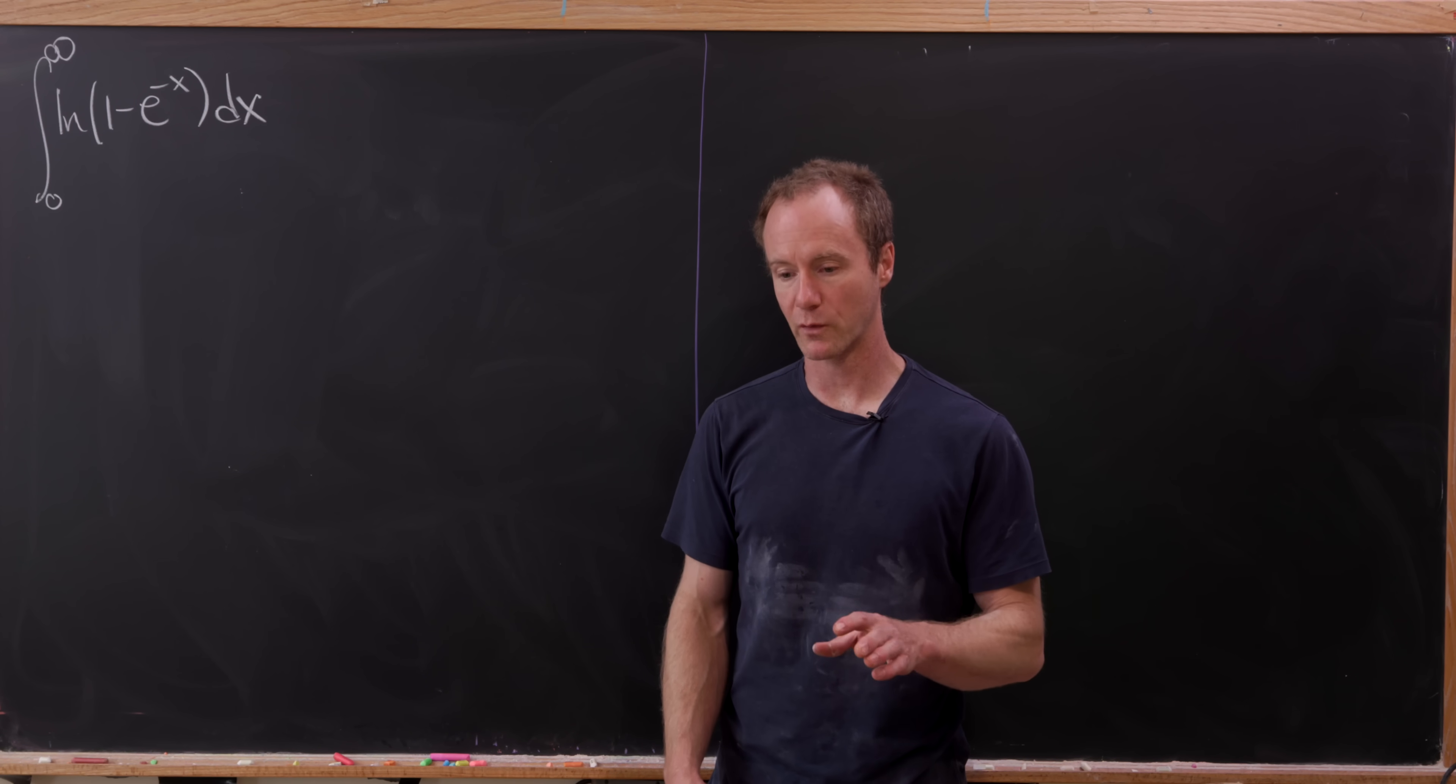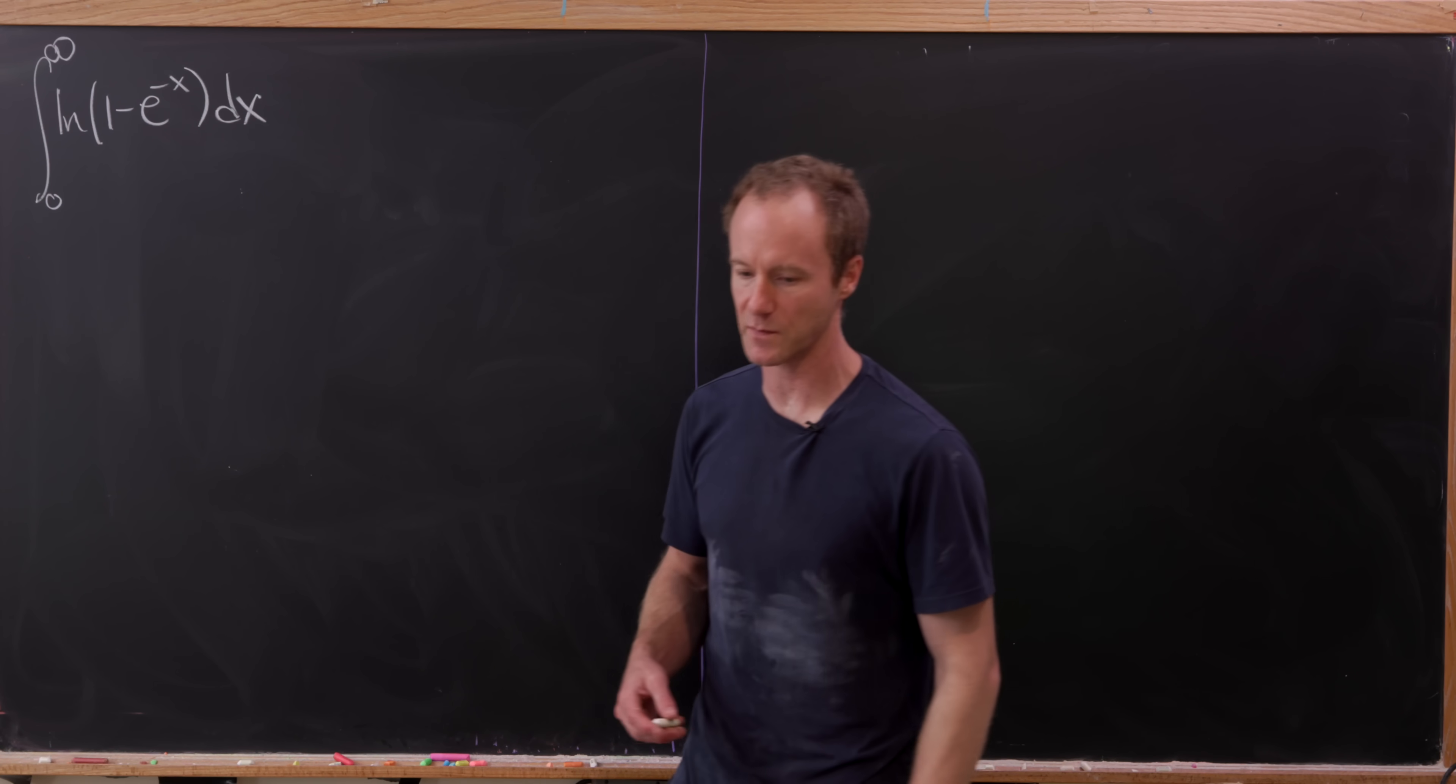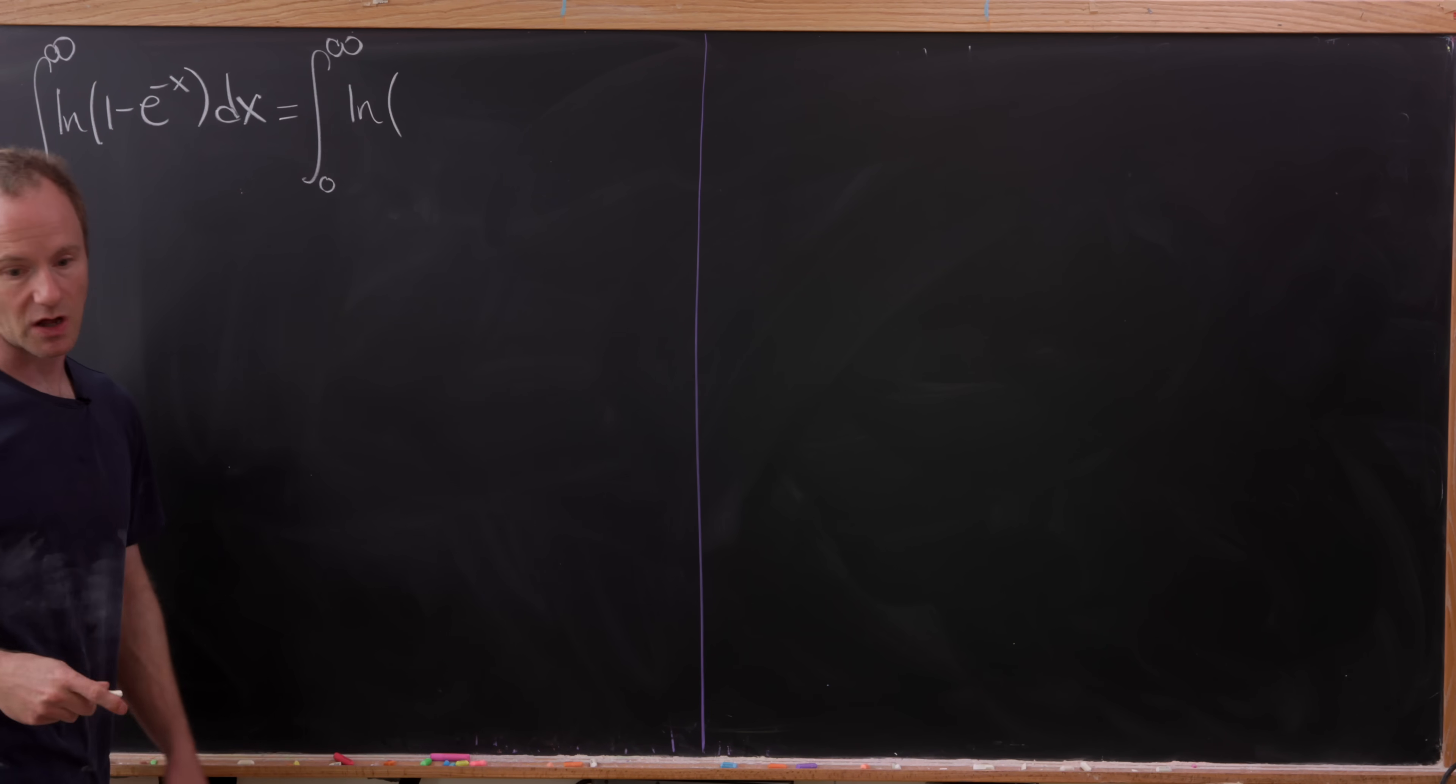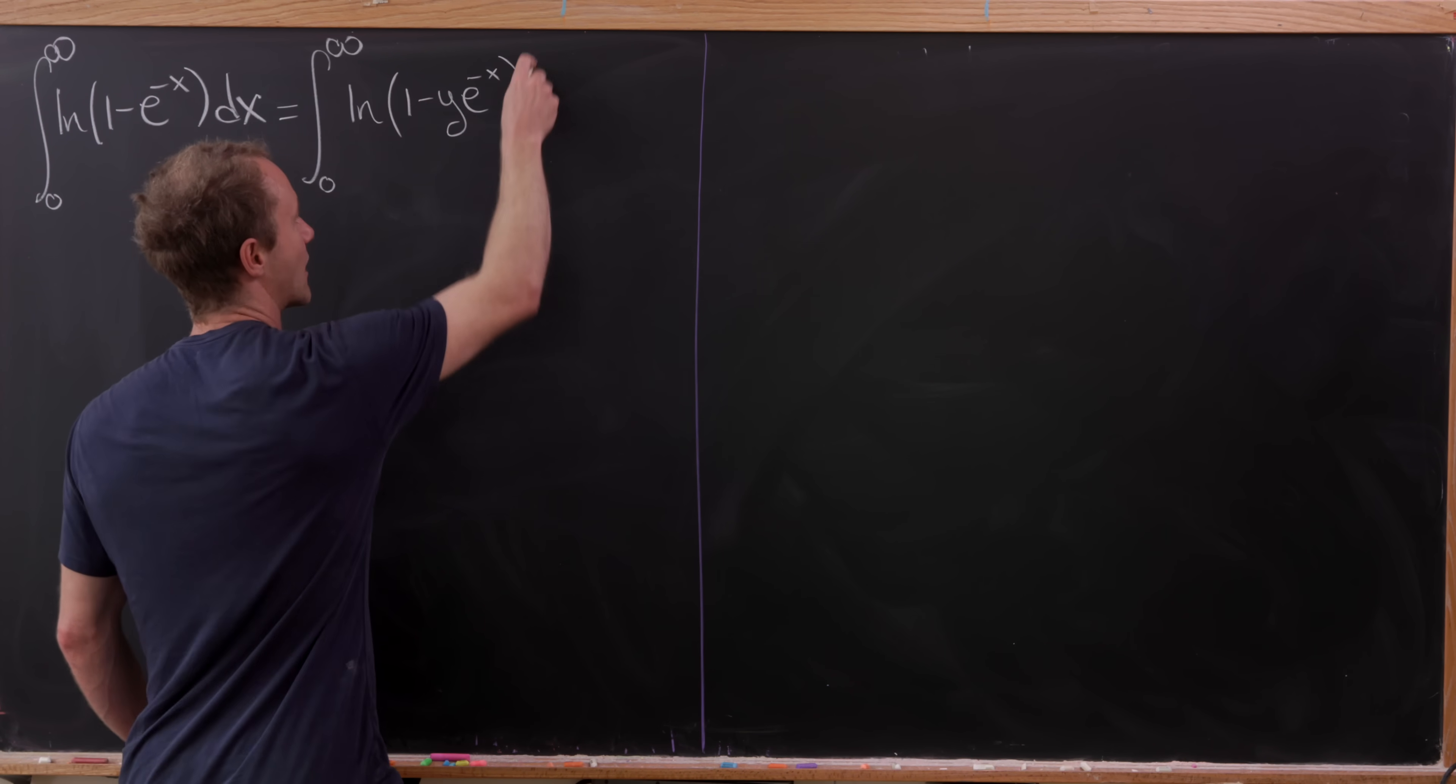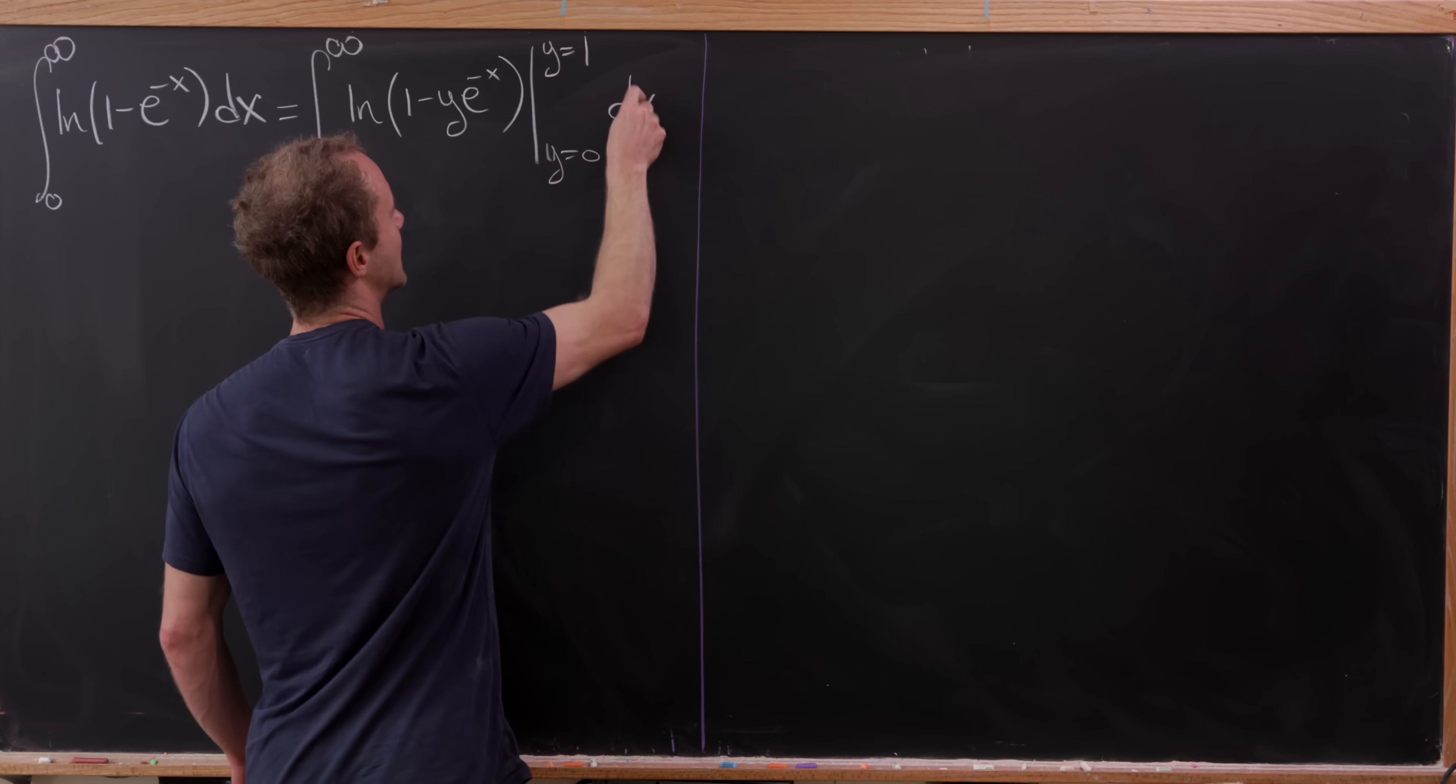So how are we going to approach this? We're going to use one of my favorite methods, which is to rewrite this as a double integral. I want to view this as the integral from zero to infinity of the natural log of one minus y times e to the minus x, where I'm evaluating that from y equals zero up to y equals one, and then dx.